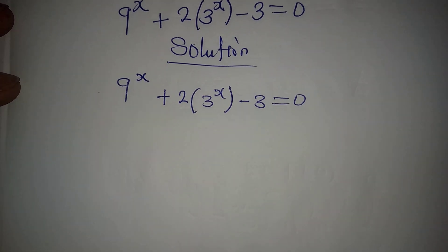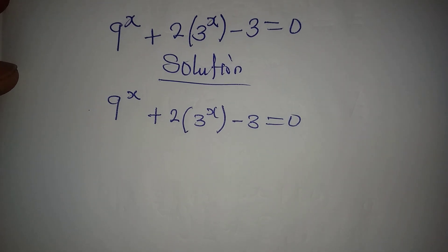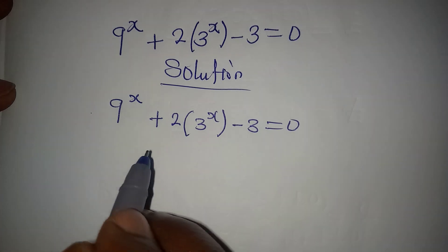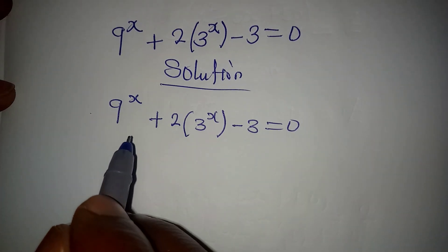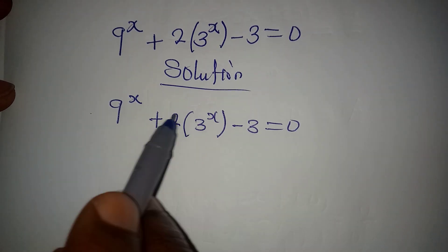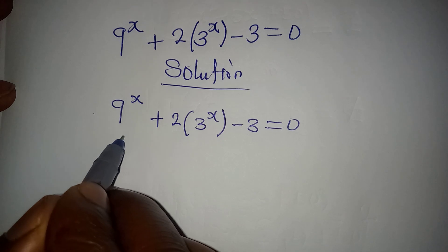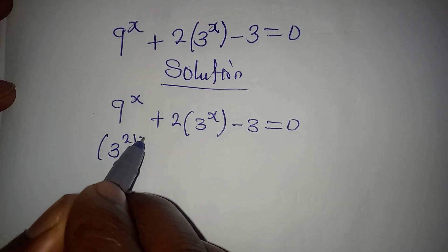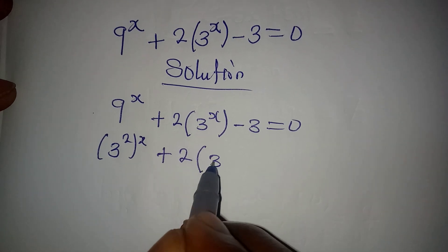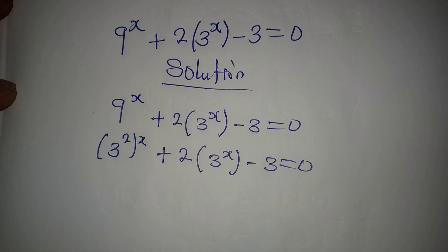At the end I will check to see if I'm right or wrong. Now we have 3 to the power of x here, and I believe we can pick this from here as well, because 9 is 3 squared. So the power of x will come, then plus 2 multiplied by 3 to the power of x, minus 3, equal to 0.